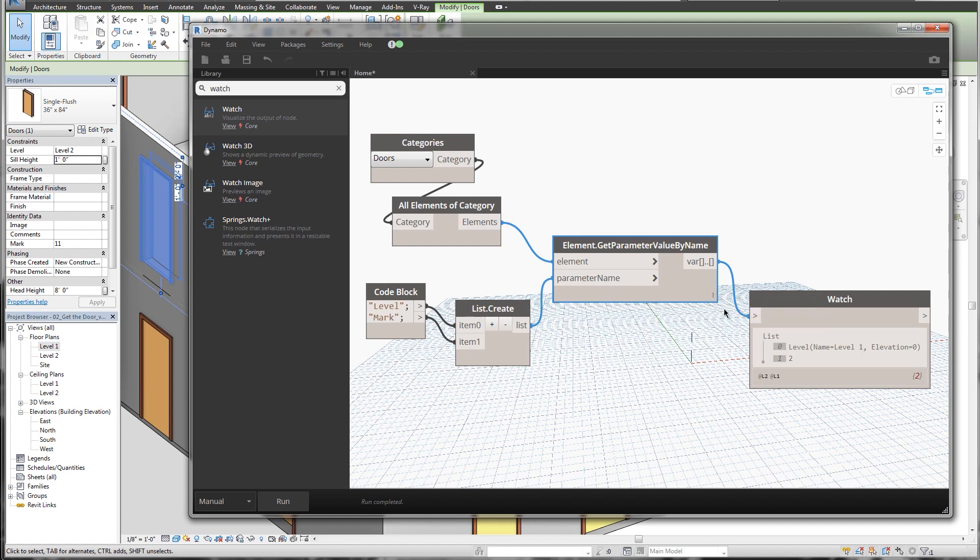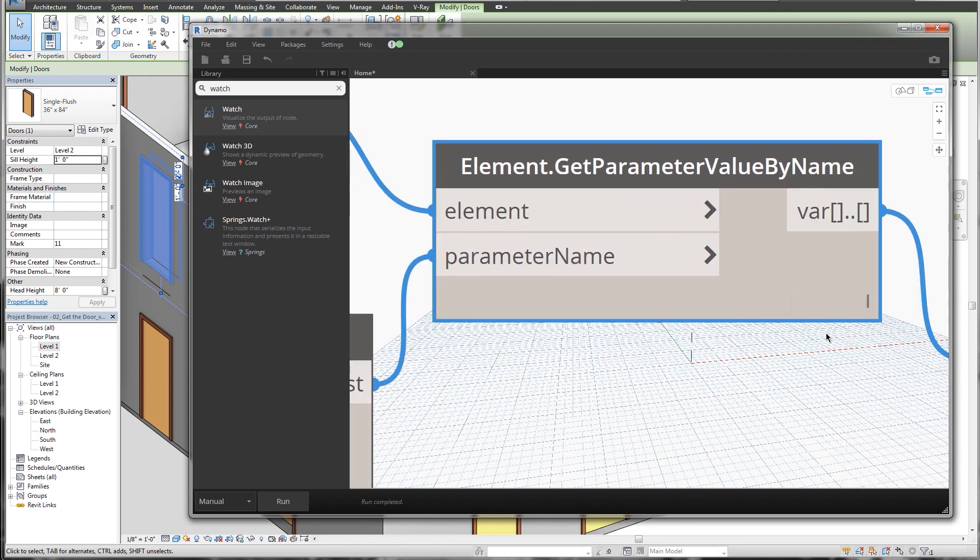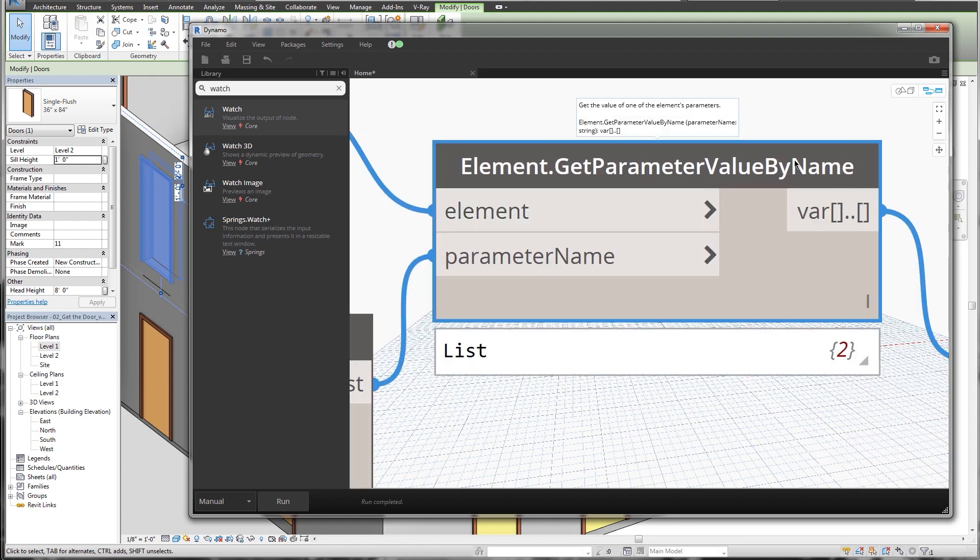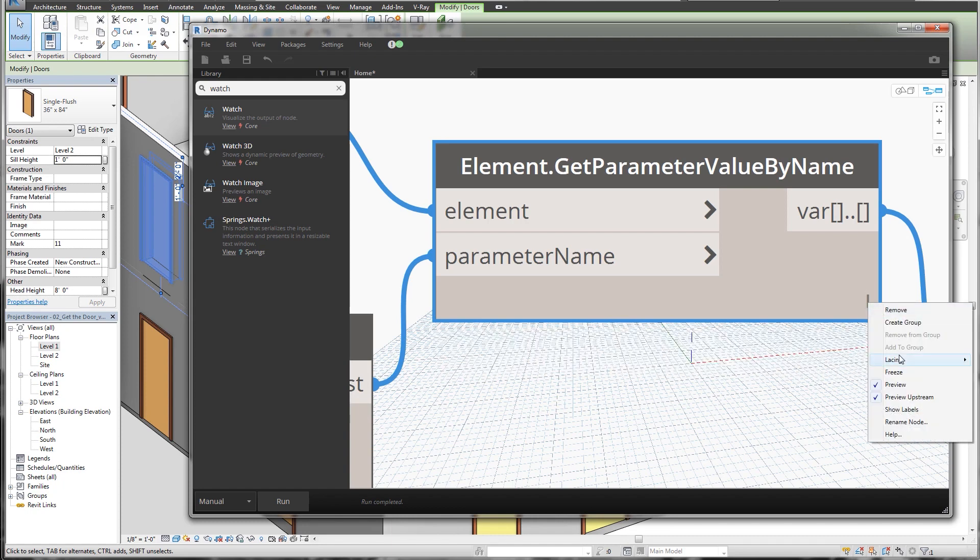And to modify it, you would actually right click where this vertical line is. So I'll zoom in a little further so you can see it. On element dot get parameter value by name, there's a straight line here. If you right click that, you can actually change the lacing value.